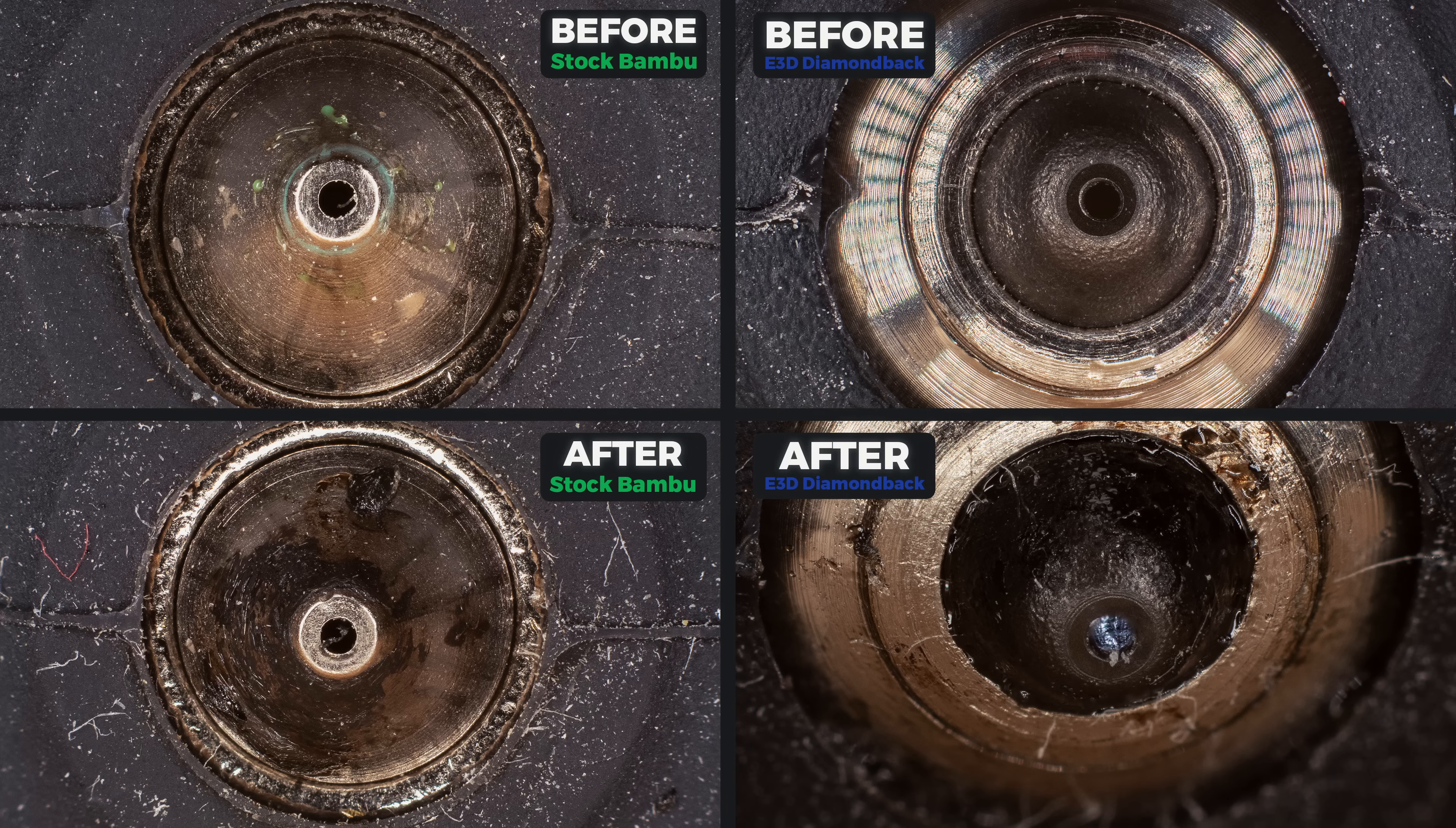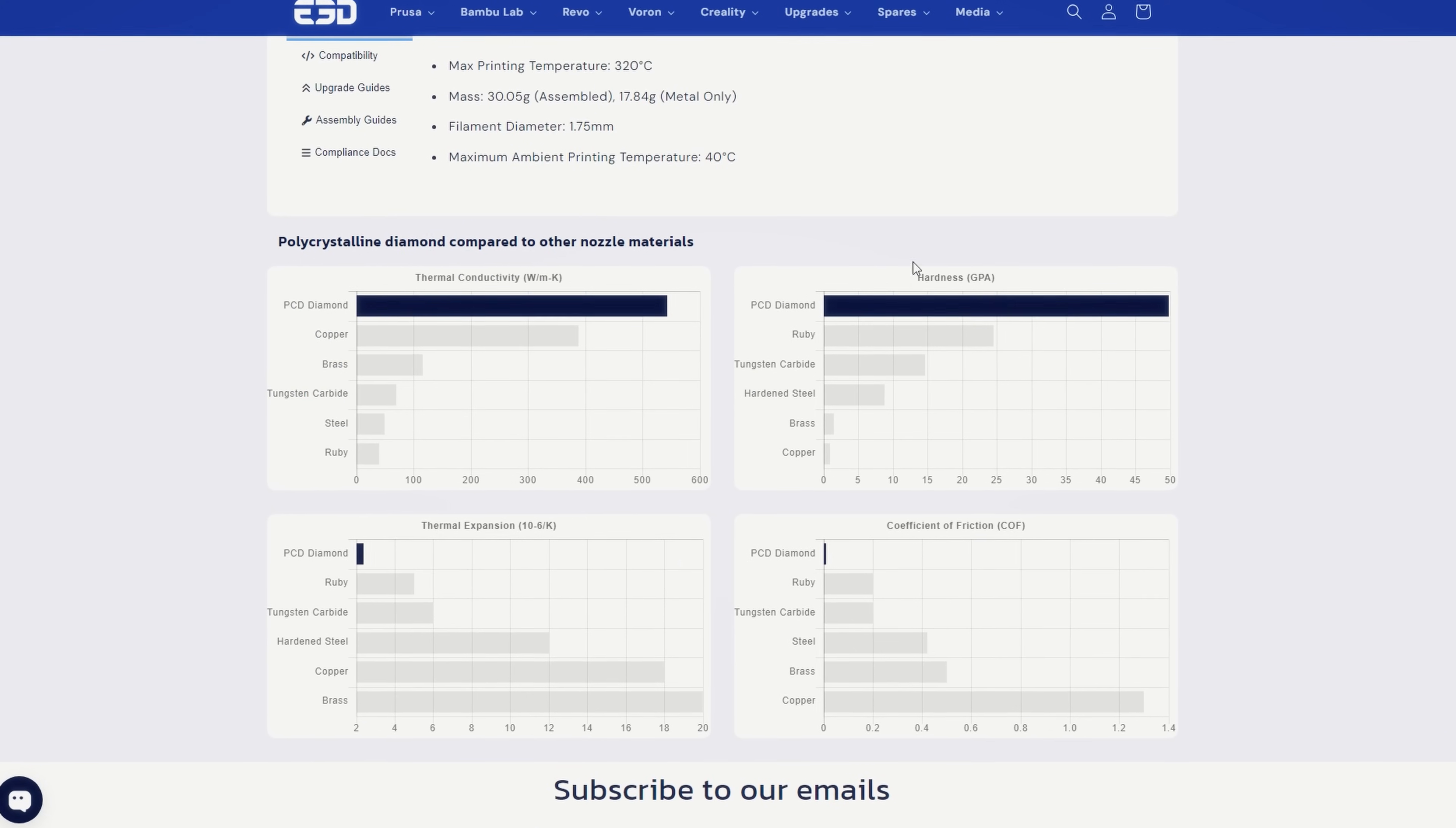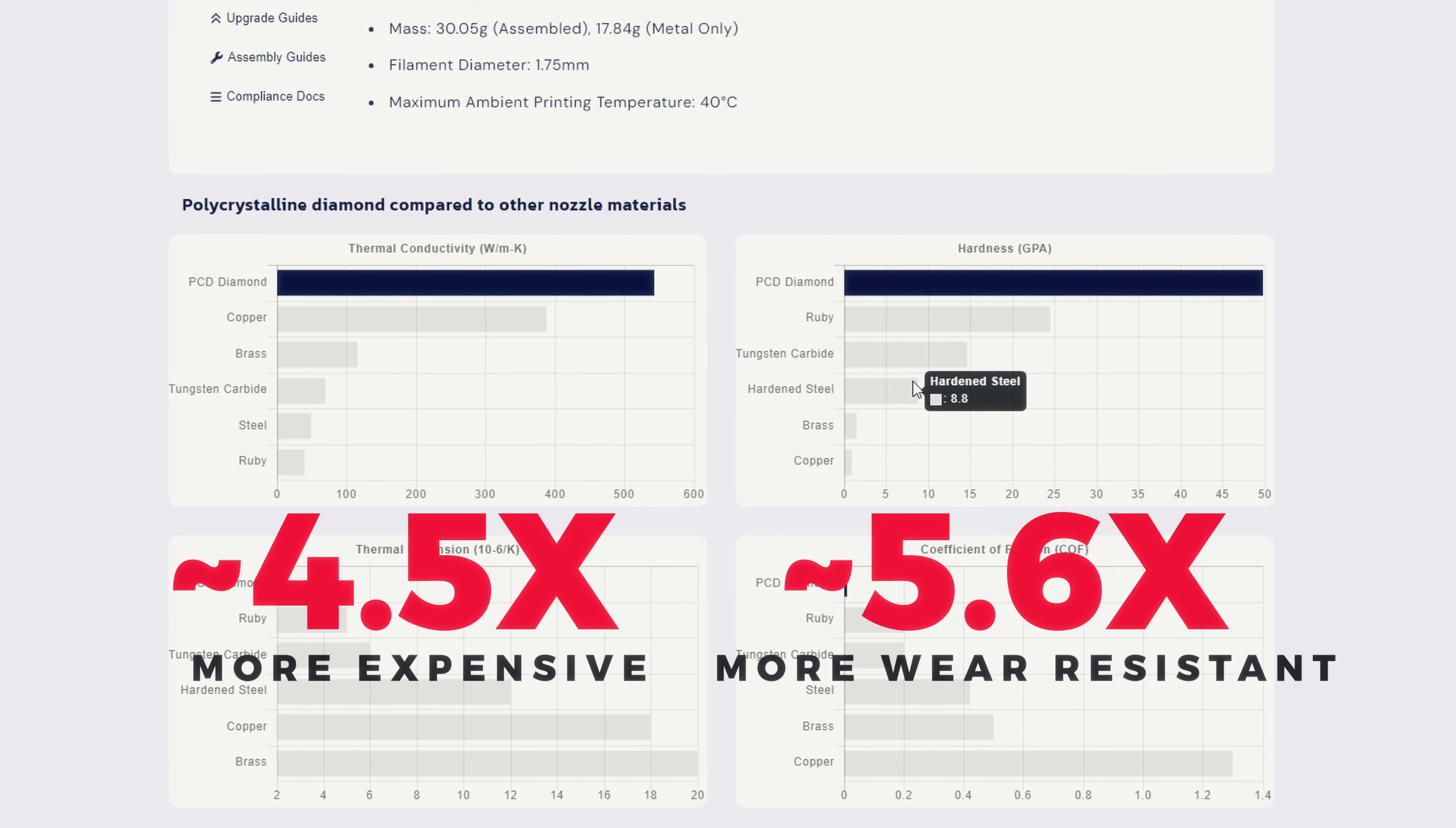So I feel like the most logical way to evaluate if the E3D Diamondback is worth it is by comparing how many times it is more abrasive resistant and how many times it is more expensive. The stock hardened steel hotend goes for 45 bucks, meanwhile the Diamondback goes for around 158 bucks. That is a difference of 4.5 times. Looking at the provided hardness level datasheet from E3D, we can see that the reused PCD diamond tip is around 5.6 times more abrasive resistant than hardened steel. And this I feel is the main fact why it is so hard to recommend.